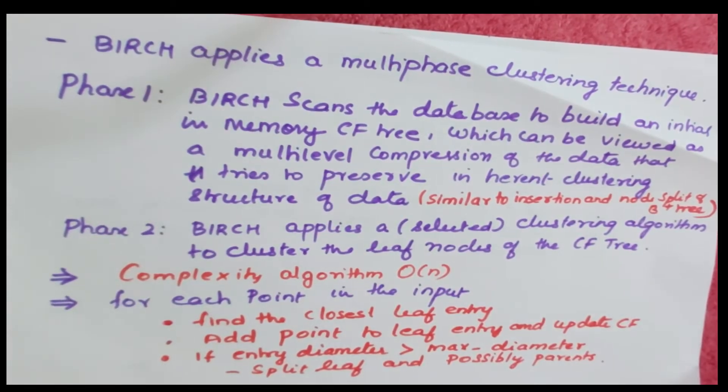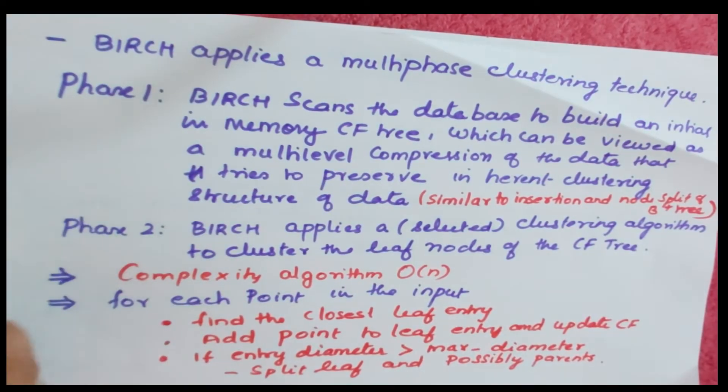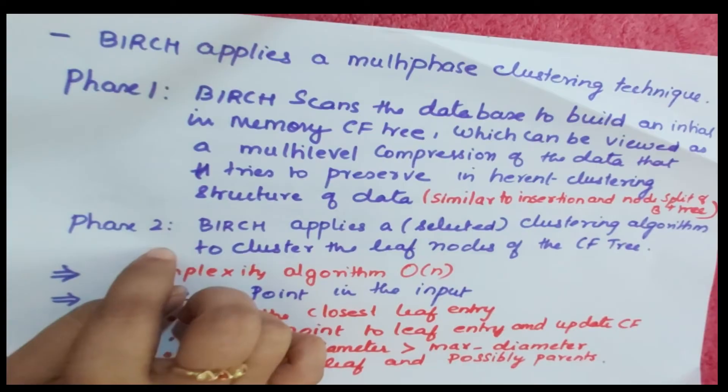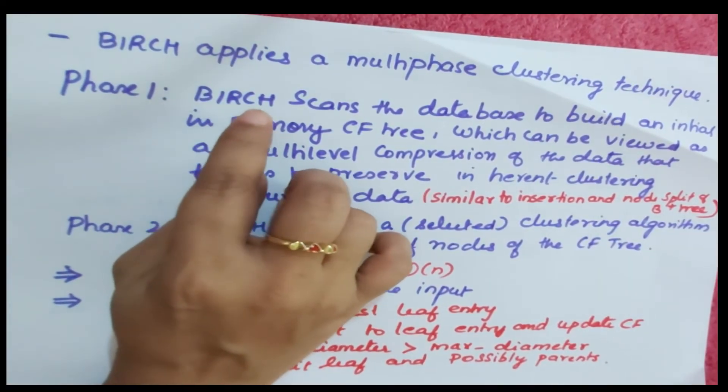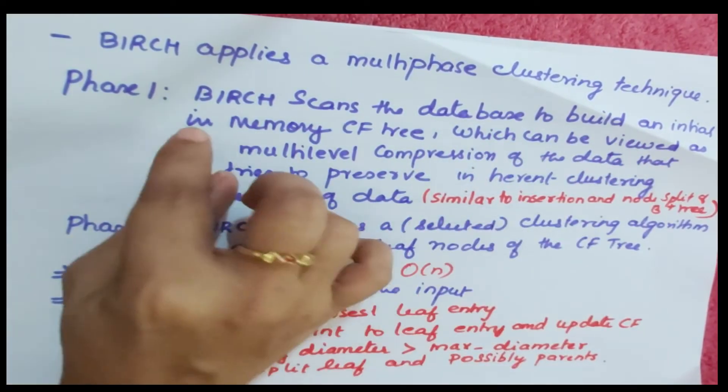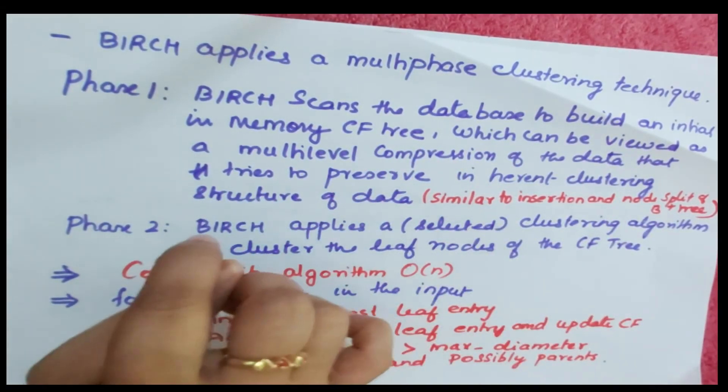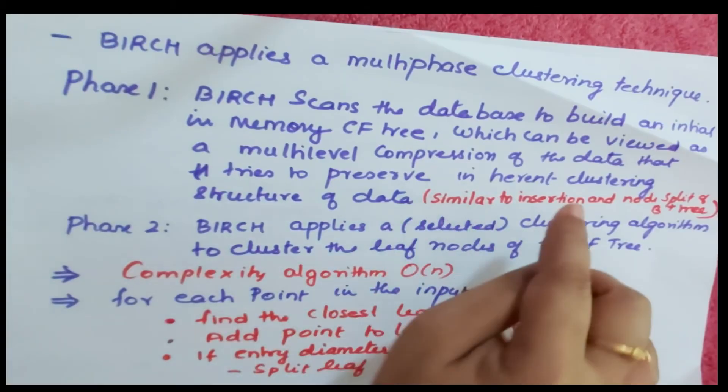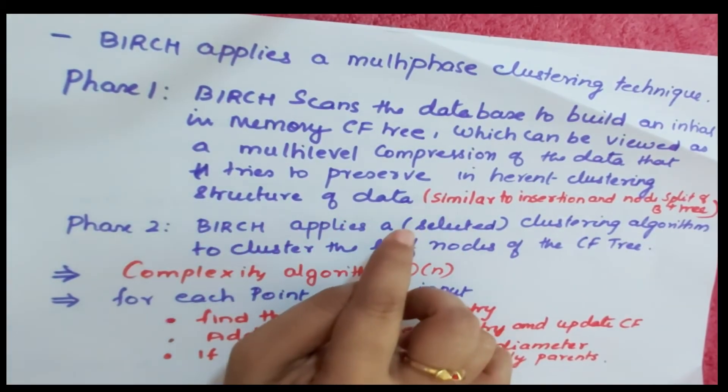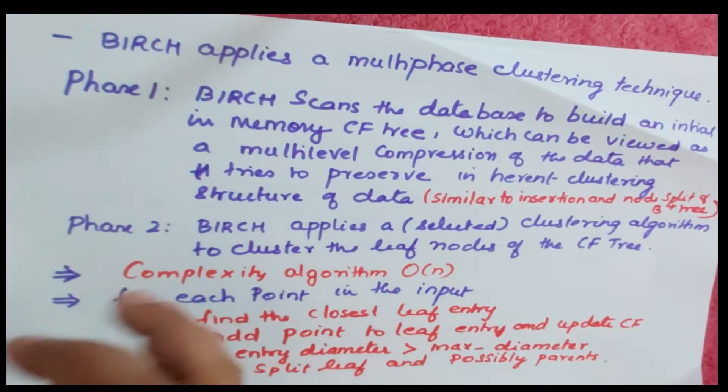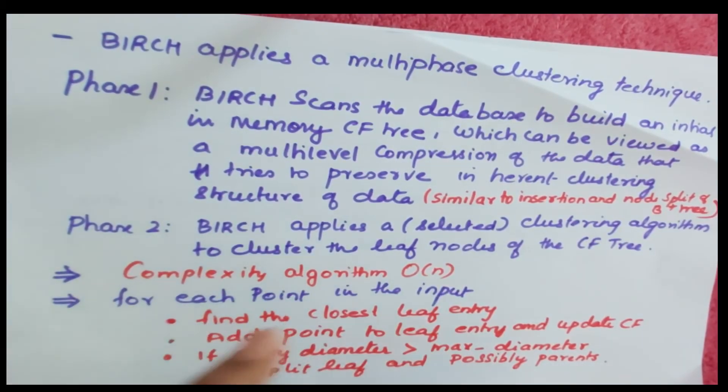BIRCH applies a multi-phase clustering technique with two phases. In phase 1, it scans the database to build an initial in-memory CF tree, which can be viewed as a multi-level compression of the data that preserves the inherent clustering structure. Whenever you get data from the database, you build an initial CF tree.